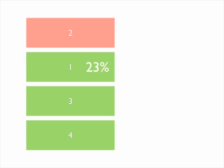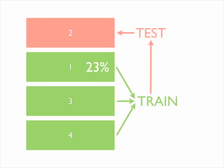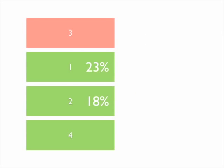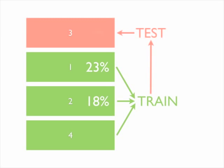We then swap places with folds 1 and 2. Now we train on folds 1, 3, and 4, and we test on fold 2. We repeat this process for each fold, withholding that fold from training and then computing error on that fold at test time. Some folds are easier to learn than others.